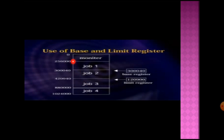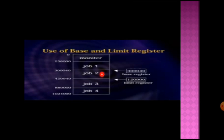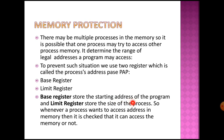Looking at the main memory, the OS occupies part of it, and we have Job 1, Job 2, Job 3, and Job 4 loaded. For example, the starting address for a job might be 300040. This value is stored in the base register as the starting address of the program. The ending value would then be stored accordingly, and the size of the process is stored in the limit register.